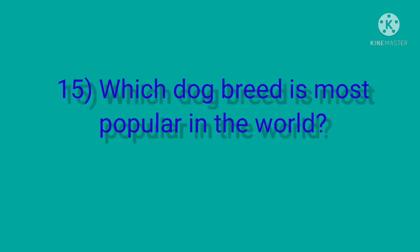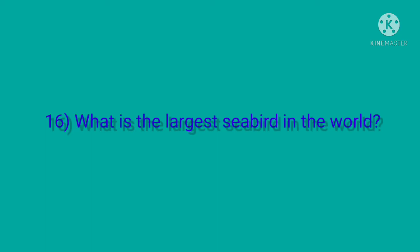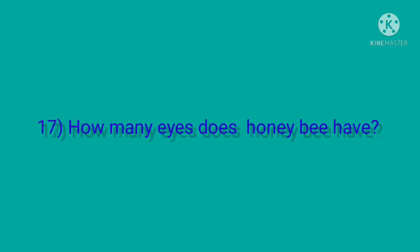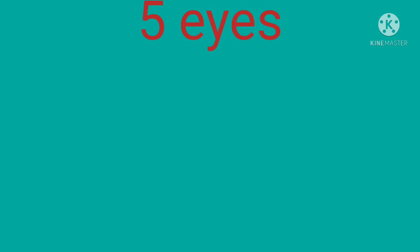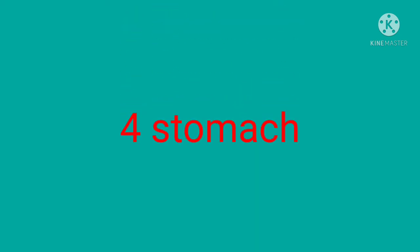Which dog breed is most popular in the world? Labrador Retriever. What is the largest bird in the world? Albatross. How many eyes does honeybee have? Five eyes. How many stomachs does a cow have? Four stomachs.